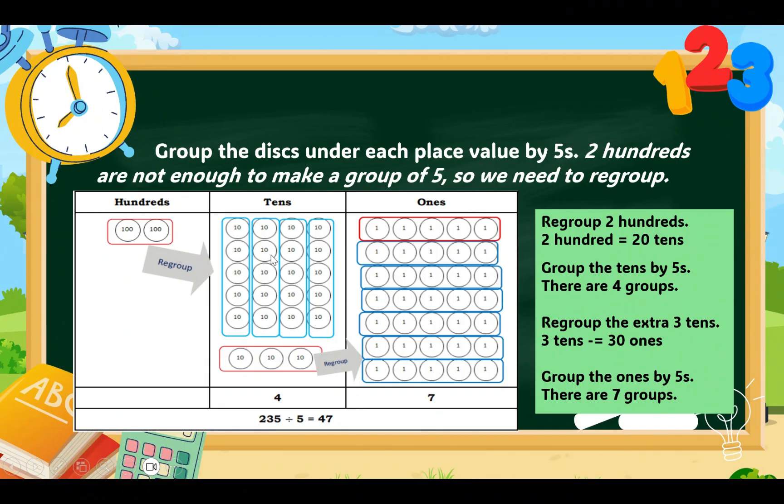Now, we transferred it to tens and we grouped it into 5. So, in 2 hundreds, there are 20 tens. And 20 tens, if we are going to regroup that into 5, there are 4 groups of 5 in 20 tens. And these 3 tens that are left, since it cannot be grouped into 5, we have to regroup it again to ones.